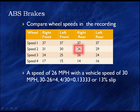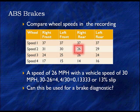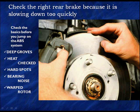If we take the average of the other three at speed 2 — 30, 31, 29 — that's an average speed of 30. So we have a wheel speed of 26 with a vehicle speed of 30, which works out to 13% slip. But if we're not locking the brakes up, why did this wheel slow so suddenly? Can this be used for a brake diagnostic? Is it possible we have deep grooves, a heat-cracked rotor, hard spots, bearing noise, or a warped rotor? Yes, this can be used as a brake diagnostic and it doesn't have to lock up.